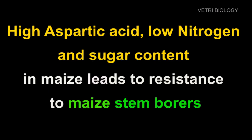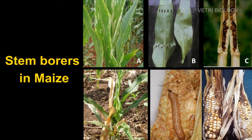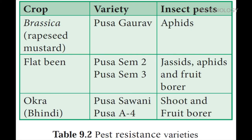High aspartic acid, low nitrogen, and low sugar content in maize leads to resistance to maize stem borers. This is an example of biochemical resistance in a plant variety. These are the examples of pest-resistant varieties developed through plant breeding.